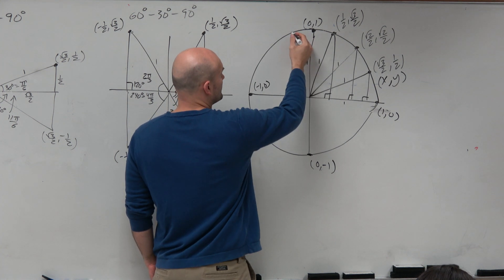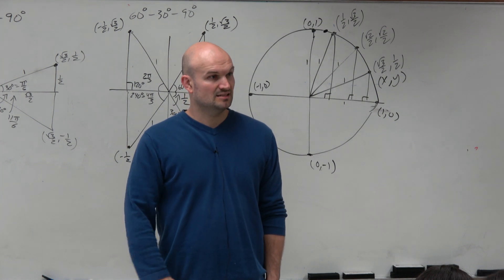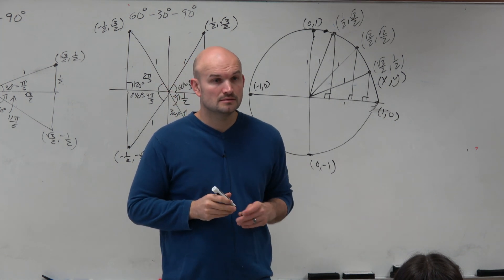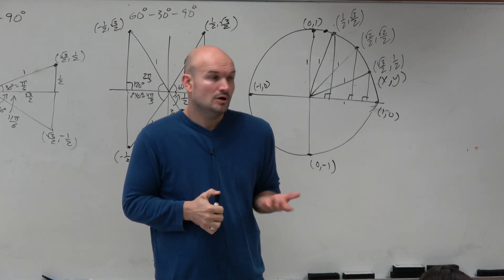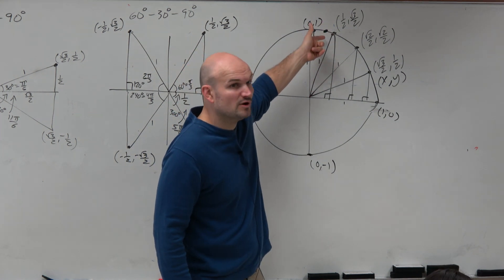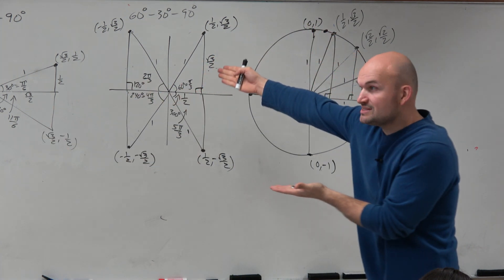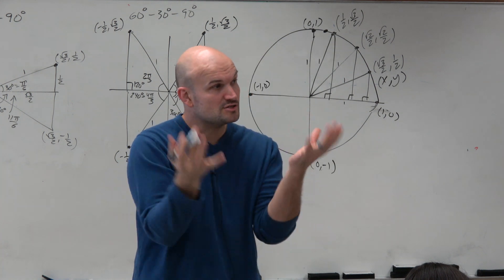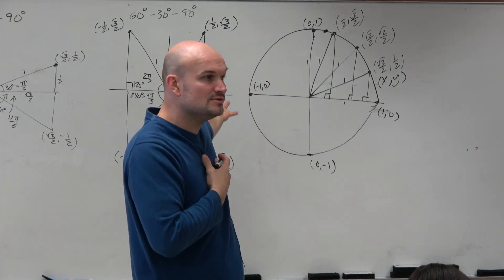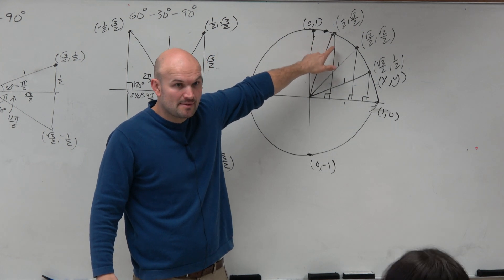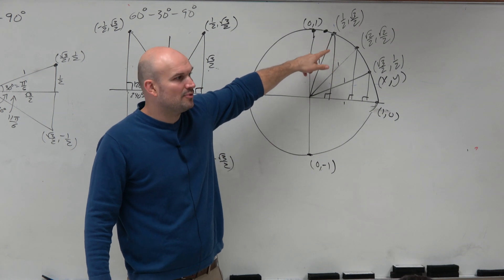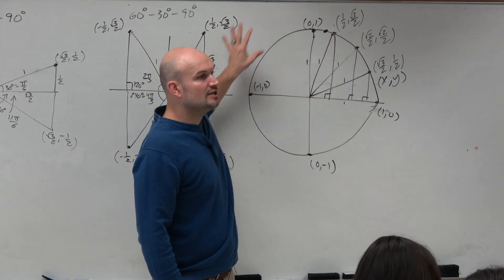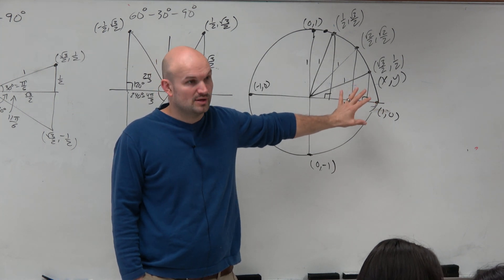Why don't we have coordinates for every point on the circle? We could create a triangle at any point, but we chose these because we know the sides from the special right triangles — that special relationship. Of course we could evaluate x and y-coordinates for other points, but since they're not special values we'd need a calculator. Since we don't have a calculator for this test, we'll only focus on the unit circle points we're given right now.